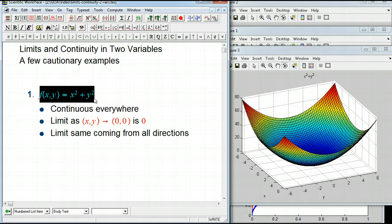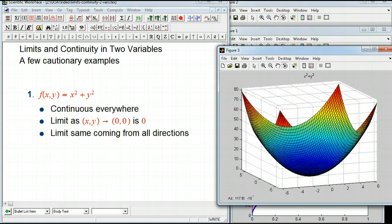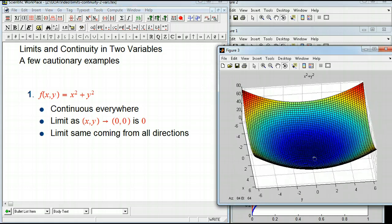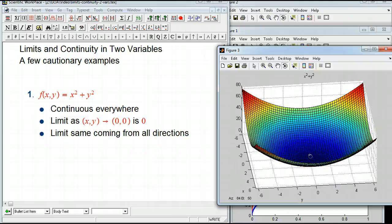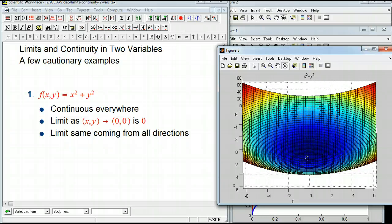So let's start with a nice example for contrast with bad examples that are going to come up in a minute. f(x,y) is x² + y², a nice symmetrical bowl, and the claim is that this is continuous everywhere, and in particular, let's look at the origin because that's where things are going to screw up in our other examples.